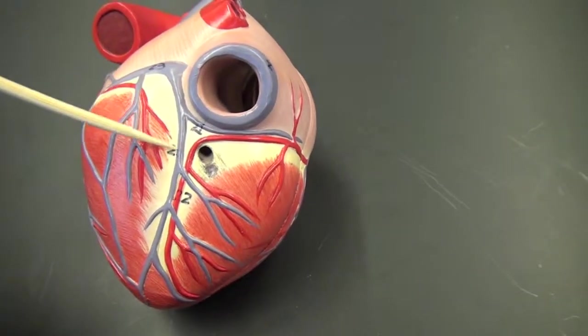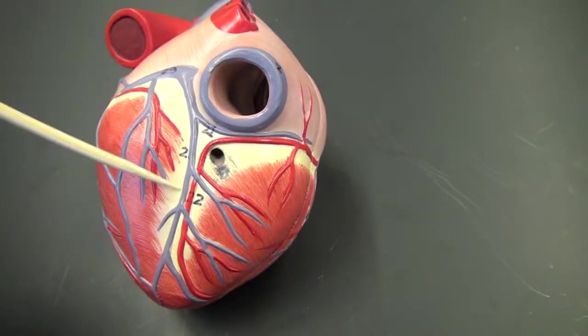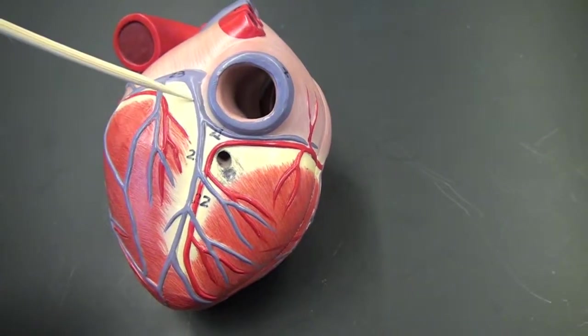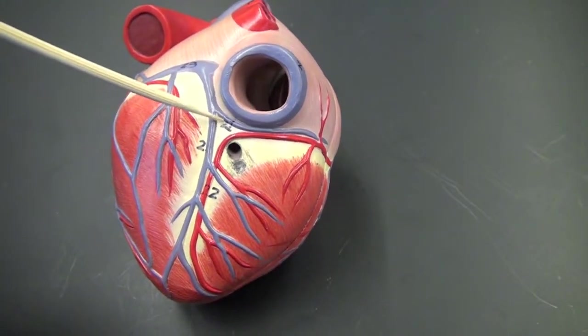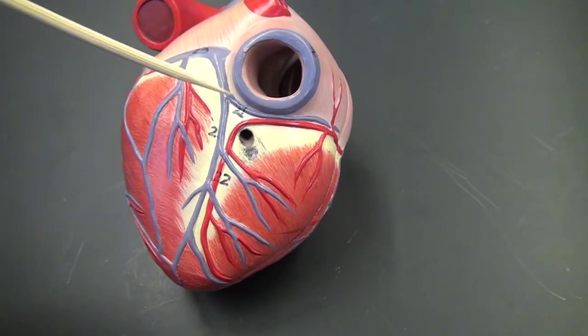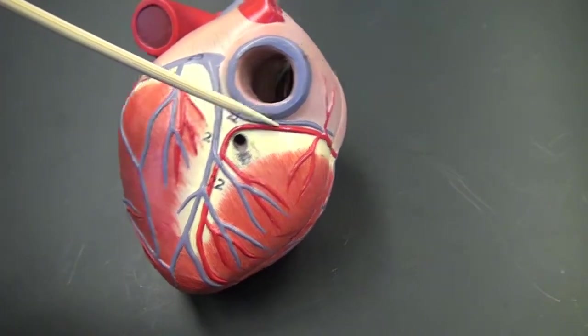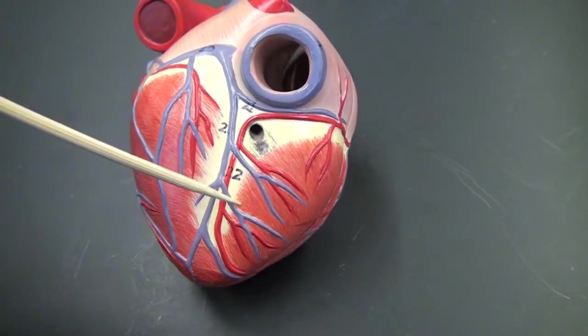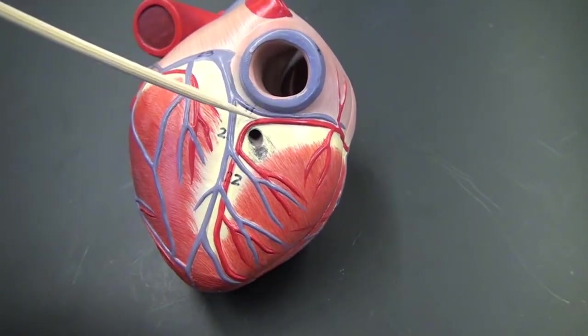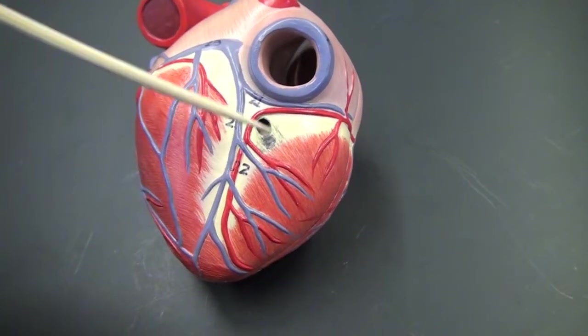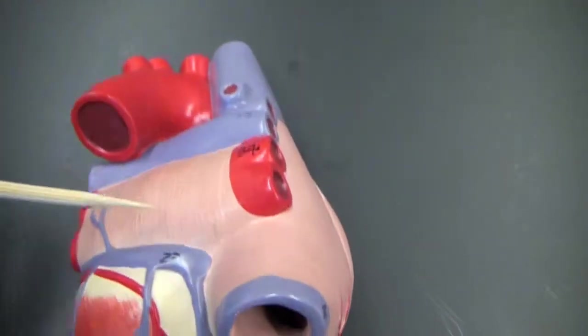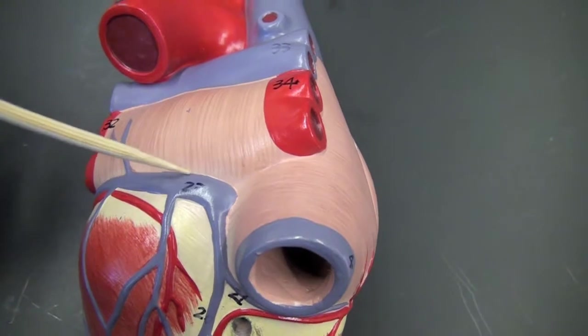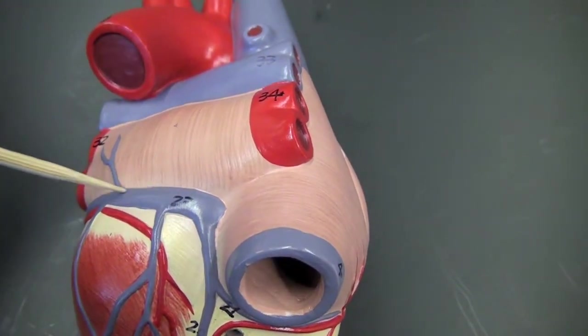Middle cardiac vein, it's the blue one. The one that branches off from it is the small cardiac vein. This red one is the posterior interventricular artery, and this thick vein is the coronary sinus.